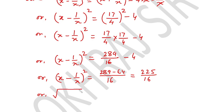Now take cube root of both sides... sorry, square root of both sides. Then square root of x minus 1 over x squared equals square root of 225 over 16.